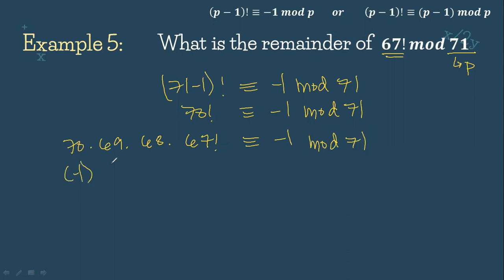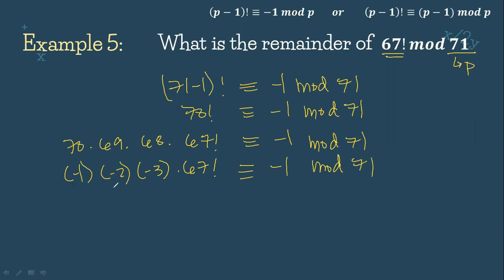So: 70 minus 71 is negative 1; 69 minus 71 is negative 2; 68 minus 71 is negative 3; 67 factorial is congruent to negative 1 mod 71. Negative 1 times negative 2 is 2; times negative 3 is negative 6. So negative 6 times 67 factorial is congruent to negative 1 mod 71. It's more strategic to subtract: negative 1 minus 71 gives negative 72 mod 71.